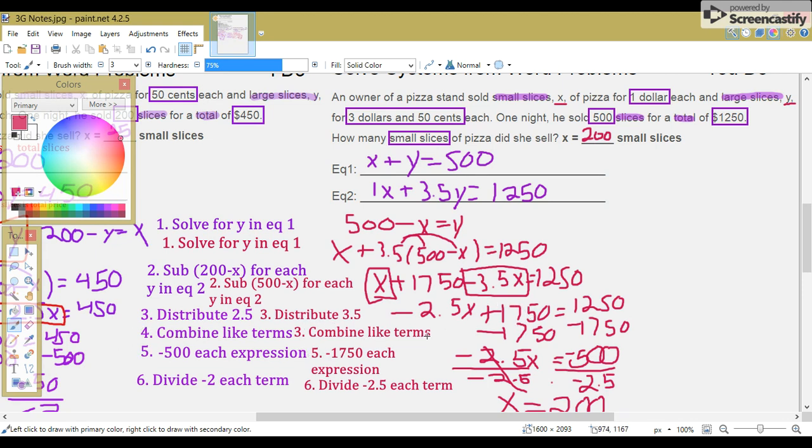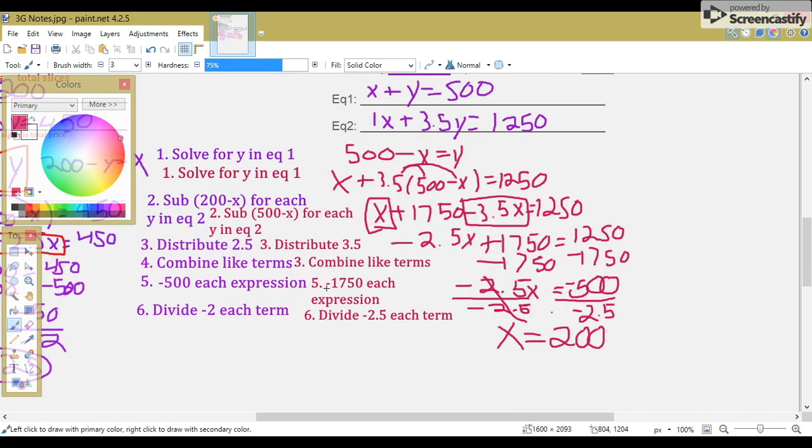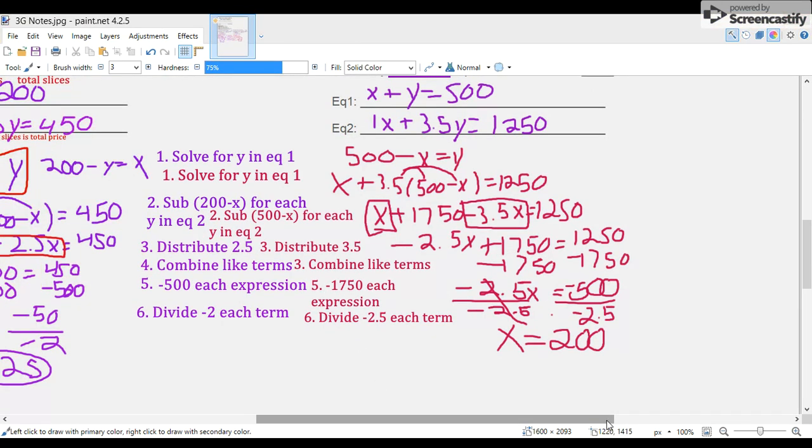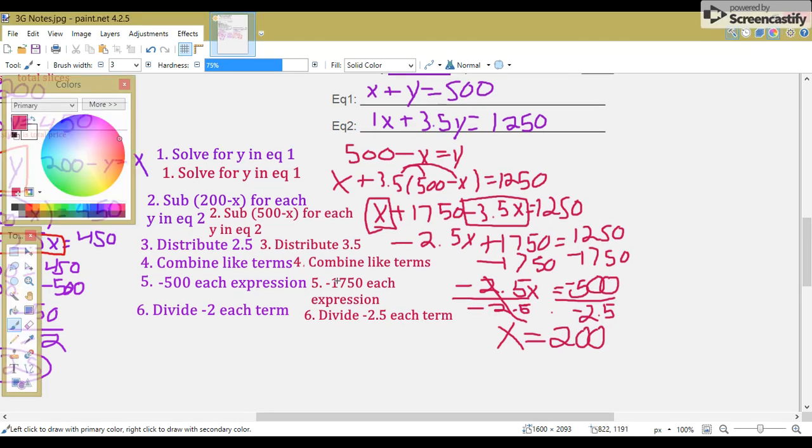Step 4: Combine like terms. Step 5: Subtract 1,750 from each expression. And step 6: Divide negative 2.5 by each term.